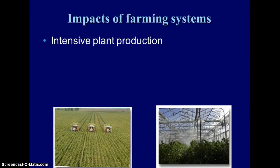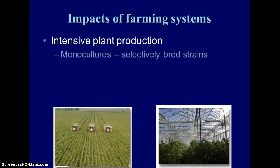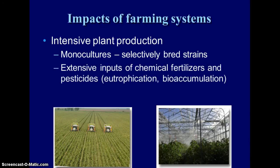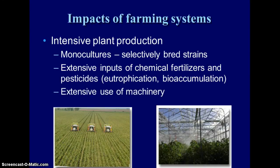Looking at the impacts of intensive plant production — this is large-scale plant production. Usually what we do is monoculture, where we have a selectively bred strain or genetically modified crop and we plant that same identical genetically modified seed. It takes a lot of fertilizers and pesticides, which in their own have a lot of negative impacts. We know that the nitrogen and phosphorus in our fertilizers leads to eutrophication. Pesticides can bioaccumulate, which leads to biomagnification through the food chains. It also requires extensive use of machinery, which adds to the energy use.